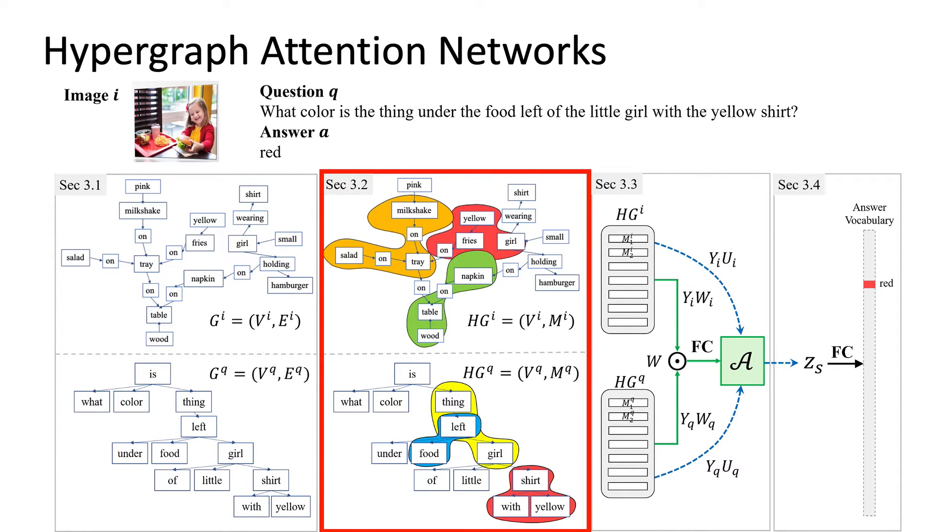And for the second problem, we show a new algorithm which compares the high-order correlations between the symbolic graphs. The algorithm, which is called hypergraph attention networks, is also called HAN.